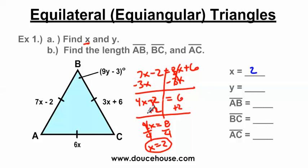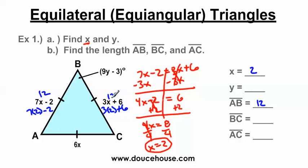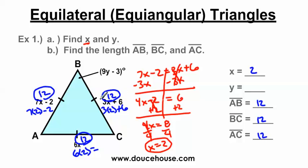Now I'll use X equals 2 to find each side length. For AB: 7 times 2 minus 2 equals 14 minus 2, which is 12. For BC: 3 times 2 plus 6 equals 6 plus 6, also 12. And 6 times 2 is also 12. All sides are congruent and equal 12 — this is correct because it's an equilateral triangle. If you did not get all the sides equal to each other, you made an error solving for X.